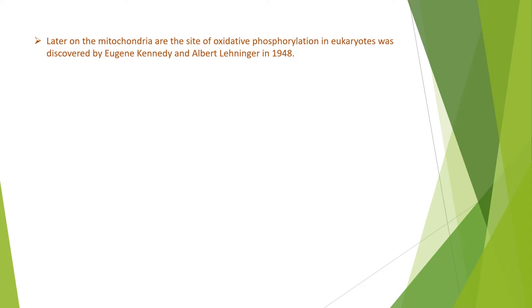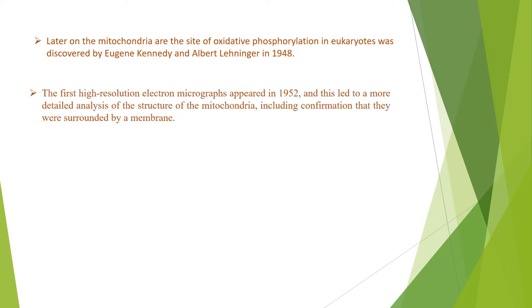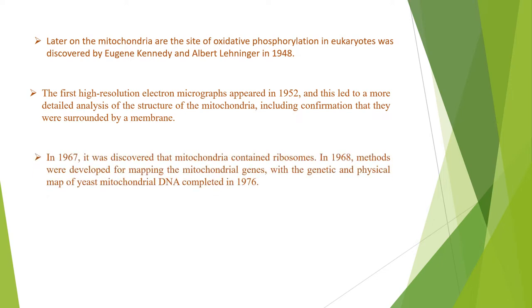The first high-resolution electron micrographs appeared in 1952, replacing the Janus green stains as the preferred way to visualize mitochondria. This led to a more detailed analysis of the structure of the mitochondria, including confirmation that they were surrounded by a membrane. It also showed a second membrane inside the mitochondria that folded up into ridges, dividing up the inner chamber, and that the size and shape of the mitochondria varied from cell to cell. In 1967, it was discovered that mitochondria contained ribosomes.